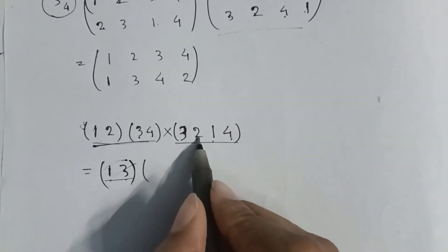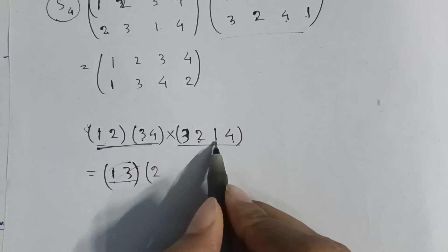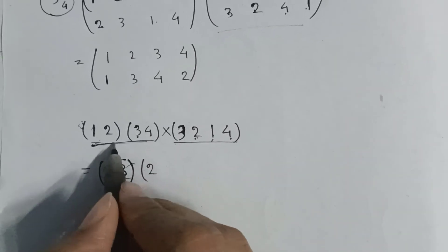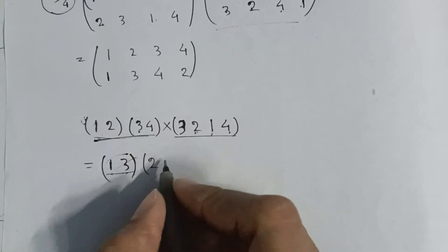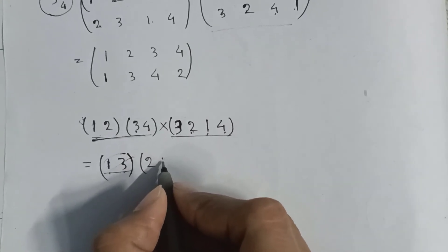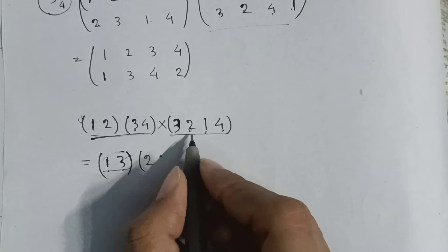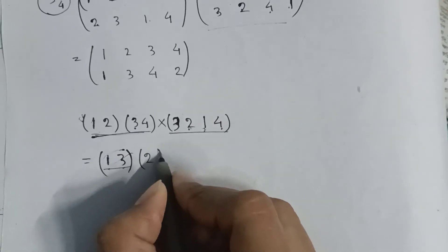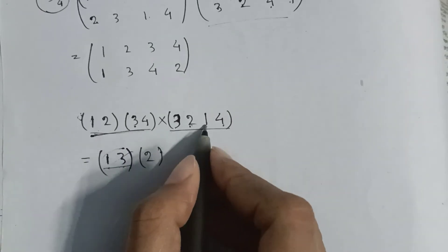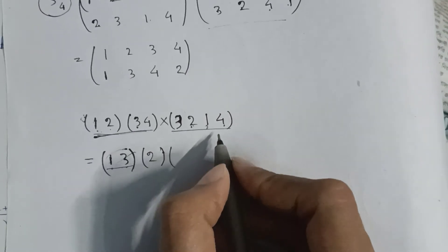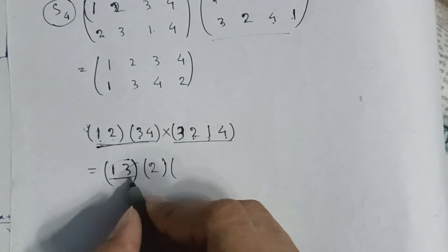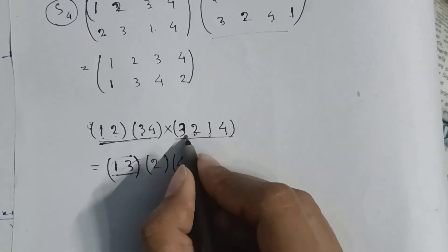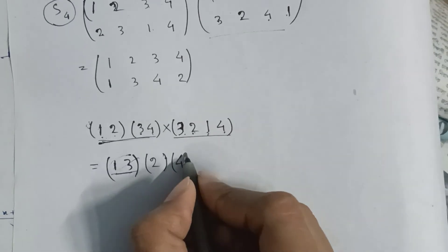Two goes to one, and one goes to two, so close the bracket. Then consider four: four goes to three, three goes to four, so close the bracket. This gives us the cycle one three, times the cycle two, times the cycle three four — so the result is the cycle one three.